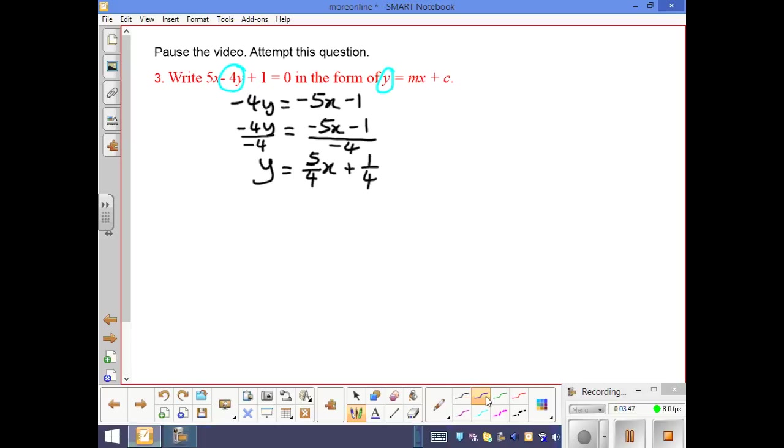So here, the Y-intercept is a quarter, and then the gradient here is 5 over 4. Thank you very much.